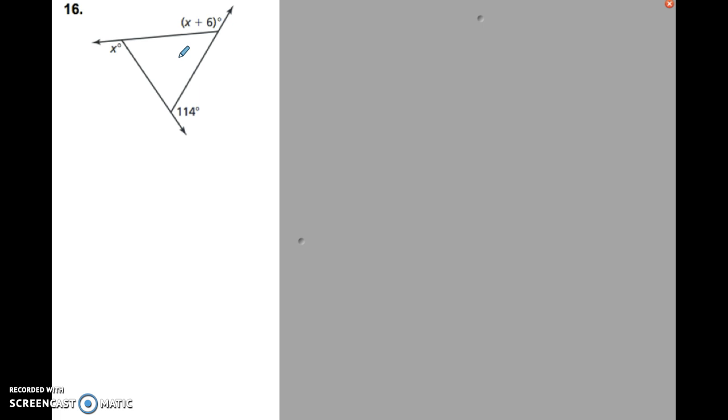the exterior angles add to 360. Let me say that one more time. On any of our polygons, regular, irregular, if we took all of those exterior angles, so this triangle has three angles, and they will add to 360.